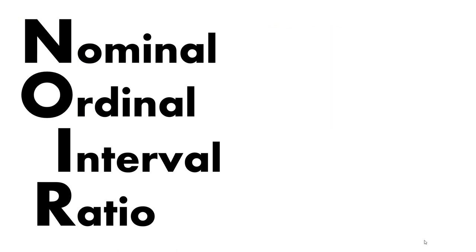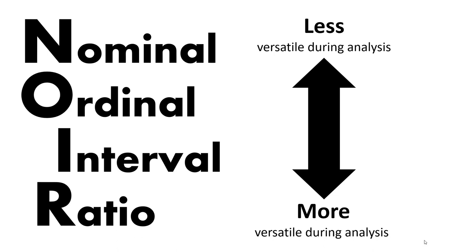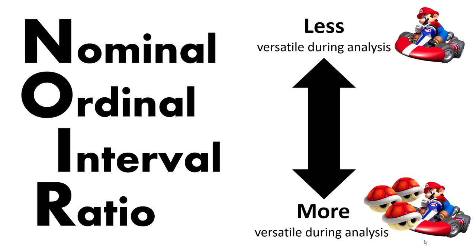The order of these four different measurement levels is important. Nominal level data is the lowest quality or least versatile for analysis, whereas ratio level data is the most versatile for analysis. Higher level data has the same properties and abilities as lower level data — it just gains additional things that can be done with it during analysis. For those familiar with Mario Kart, imagine Mario driving around on the racetrack as nominal level data. If he gains three red shells, all his previous abilities are still present — he's just gained additional powers. That's higher level measurements.